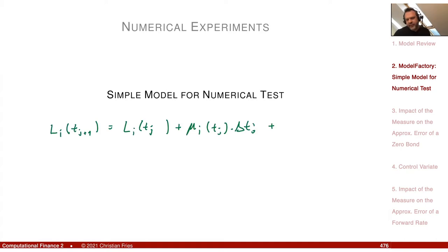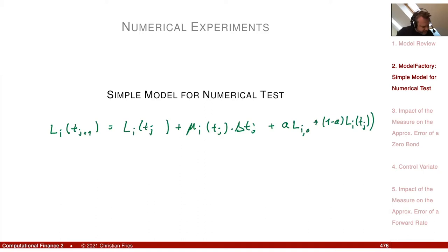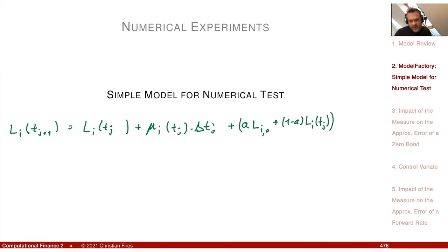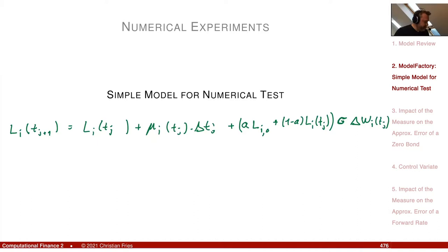I would like a volatility structure that I can play with — a blended model being a linear interpolation of a log-normal one and a normal one. I need some volatility parameters, just a single parameter, and of course my Brownian motion dW_i. This is a simplified model with just a single parameter and one additional blending parameter.